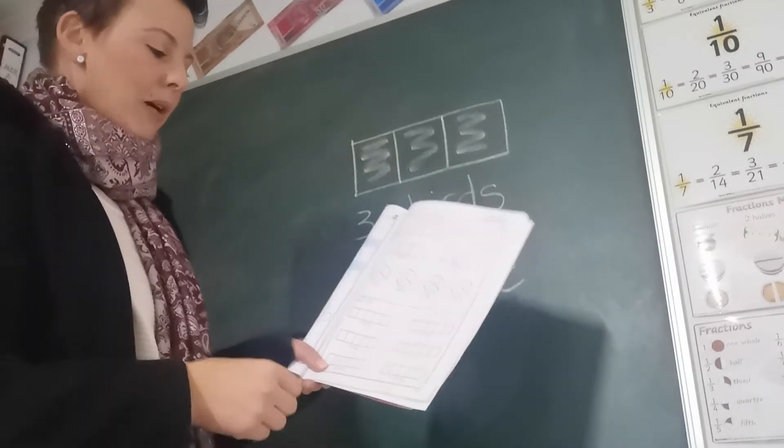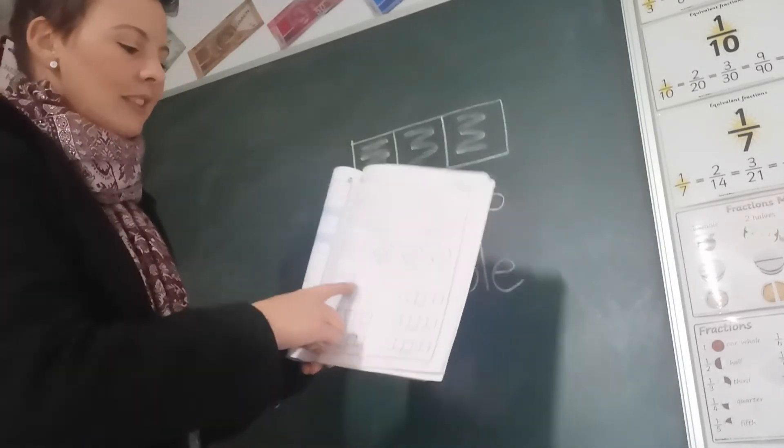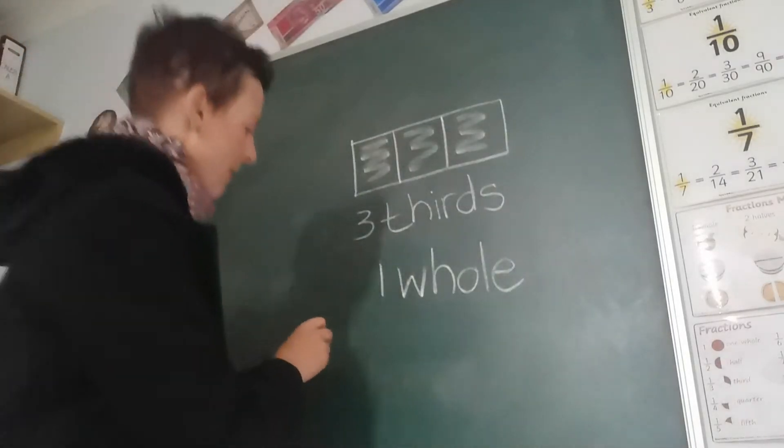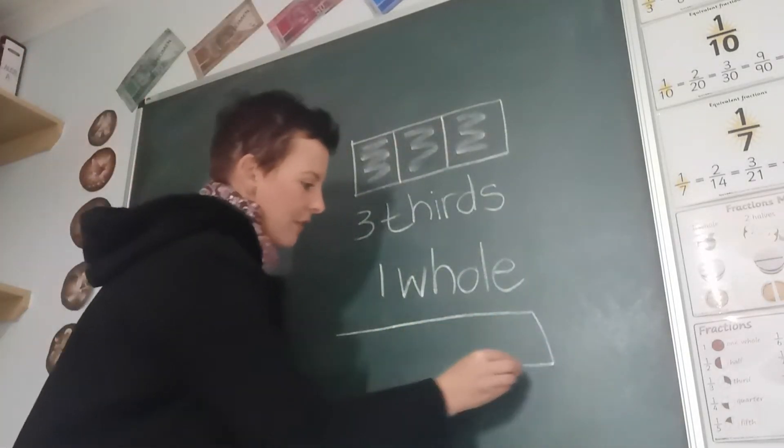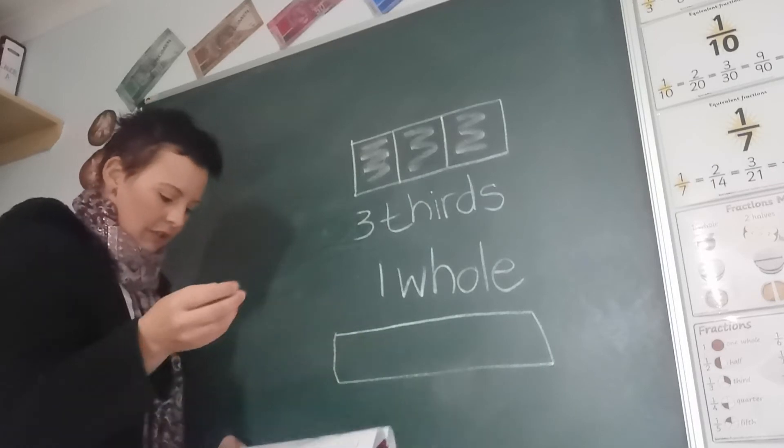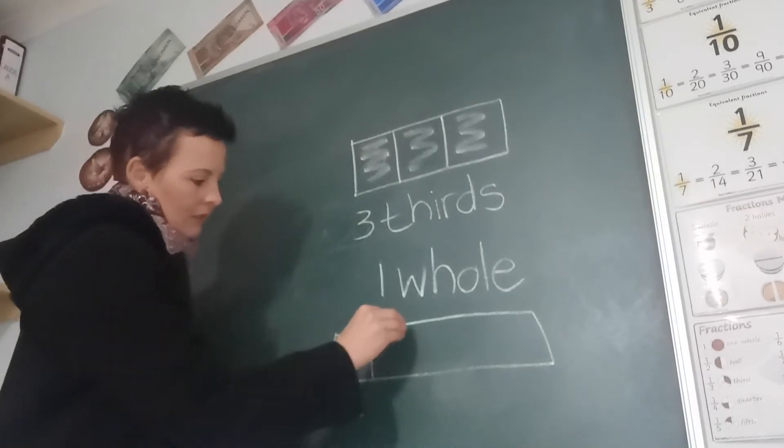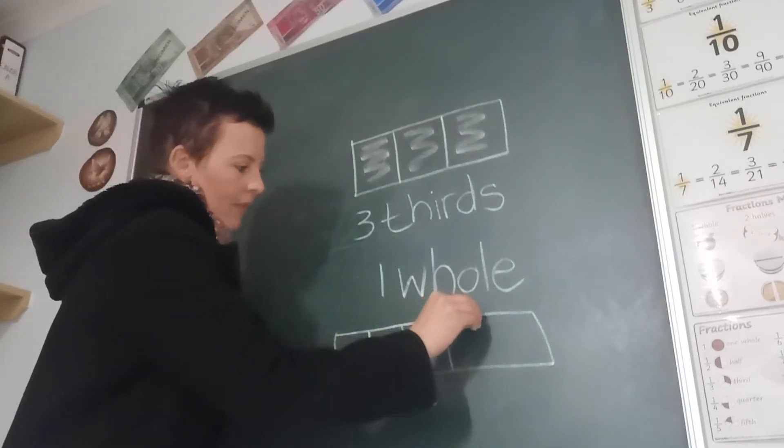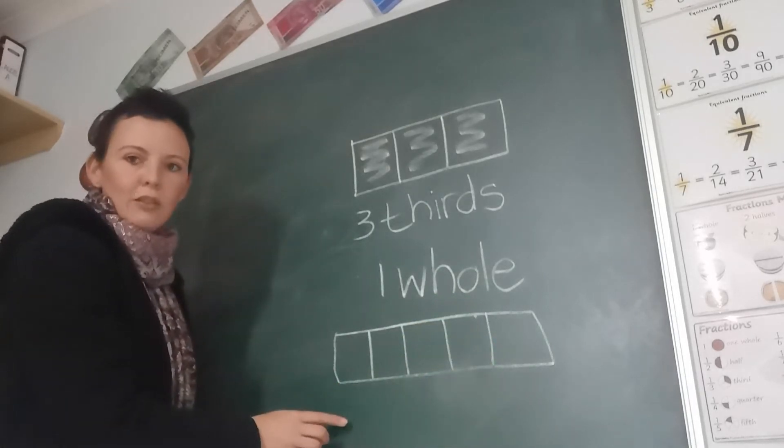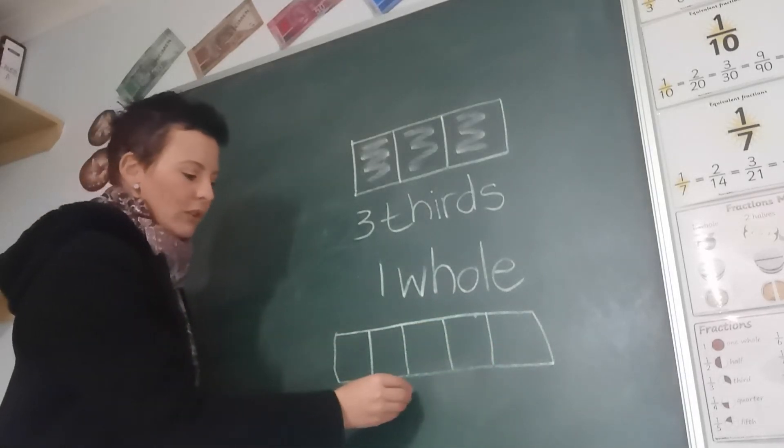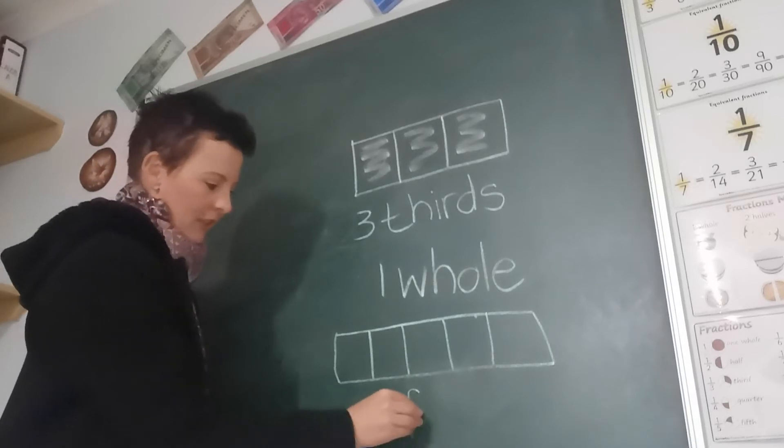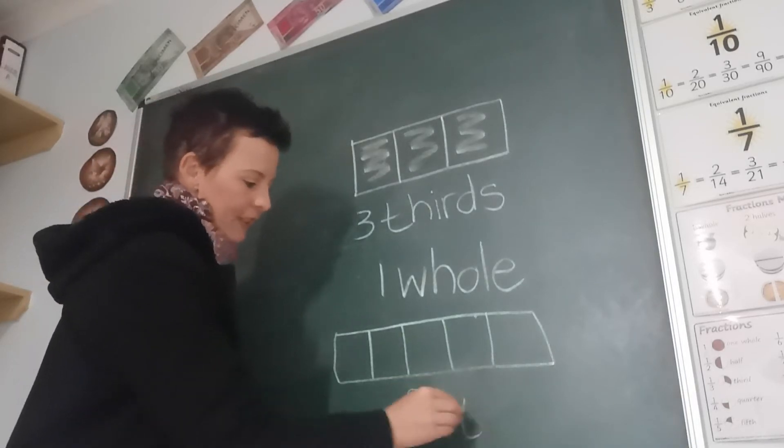Okay, then at the bottom, they gave you 6 rectangles that are all divided into 5 parts. Okay, if a shape is divided into 5 parts, it's called a fifth. Okay, it's called fifths.